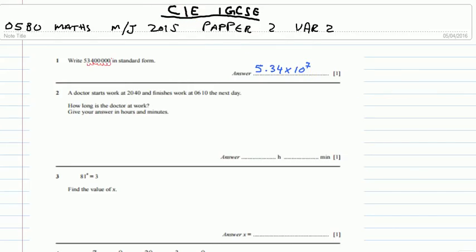Number 2. A doctor starts work at 20:40 hours and finishes at 6:10 hours. So, how long is the doctor at work? So we have to calculate the difference from these two times.